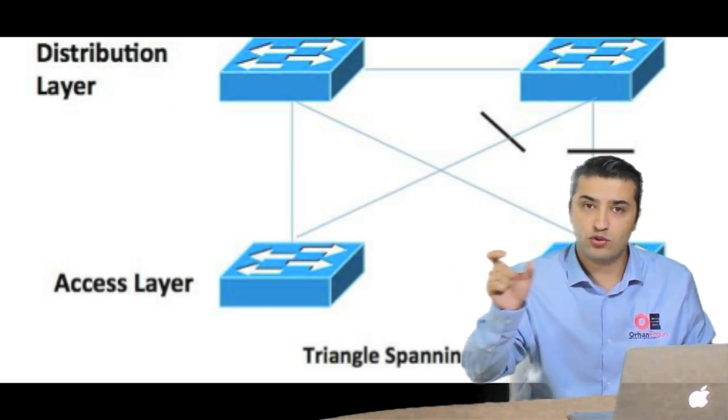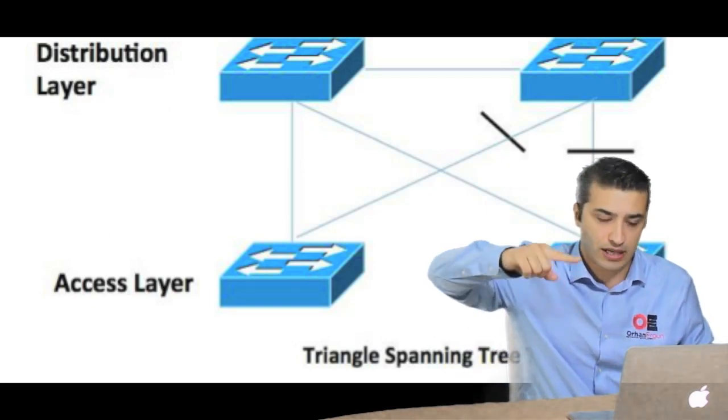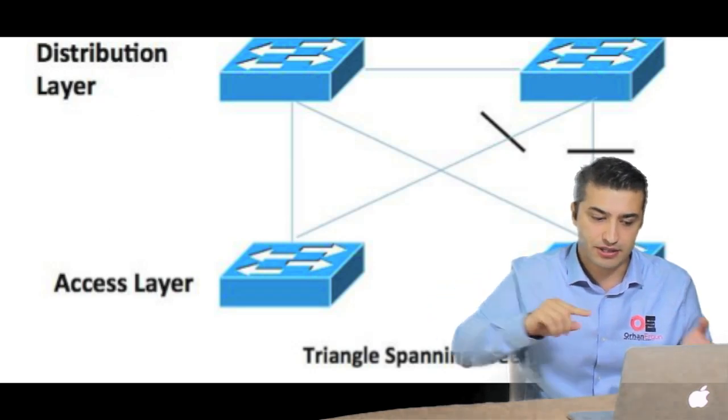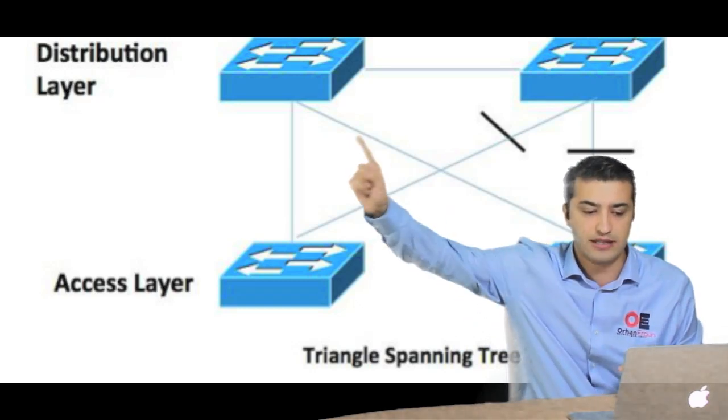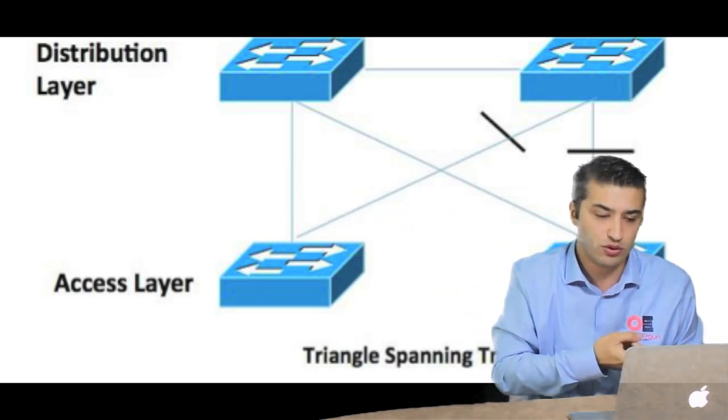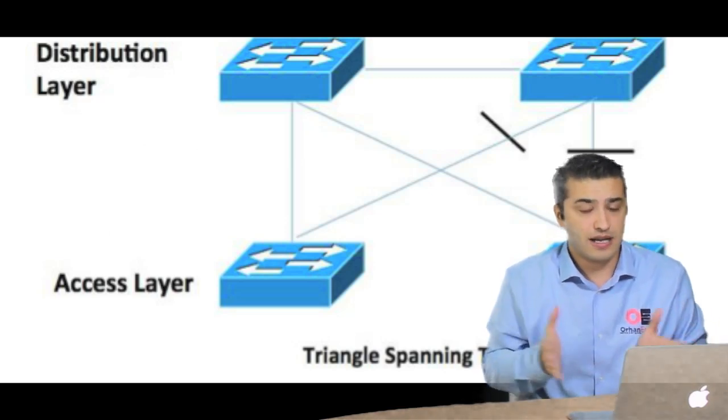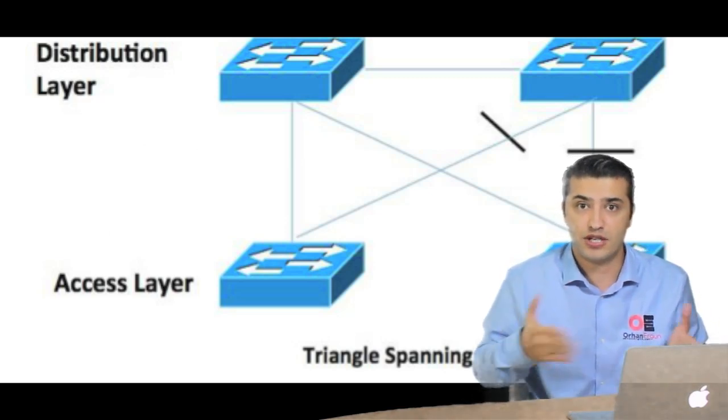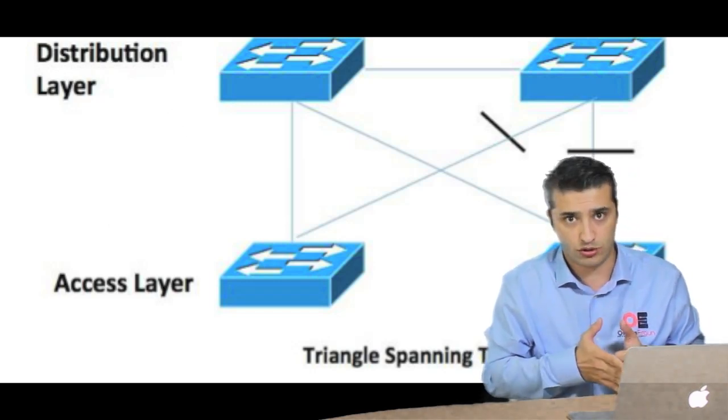I have between two distribution layer switches layer 2 connection. If I have that one, from whenever the frame comes from the access layer switch, it will go to distribution and it can come back to that same access layer switch back. This is not good. And if spanning tree is used, one of the links definitely will be always blocked.